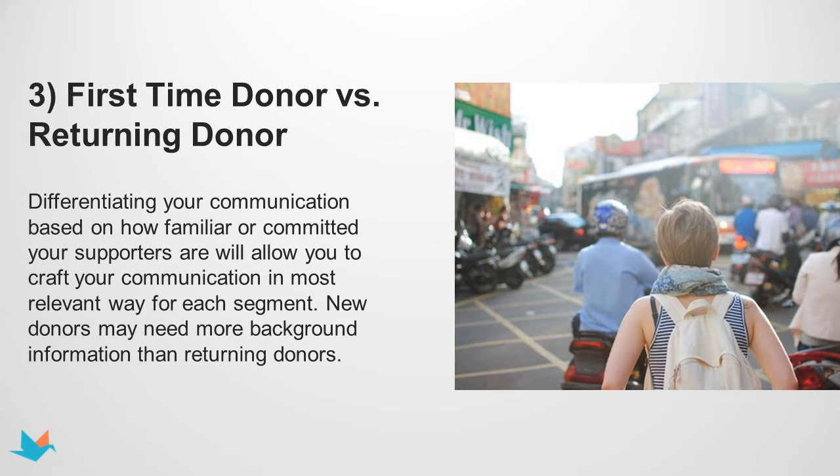The third way is to segment between first-time donors versus returning donors. New donors may need more background information than returning donors, so you can speak to them in a different way — similar to how you'd interact with a friend you've just met versus one you've known for years. We have a podcast at CauseVox where we interviewed someone who wrote a book called Date Your Donors, talking about how donor cultivation is like the dating game: you don't want to ask people to commit too soon, you cultivate through the various stages.